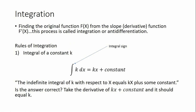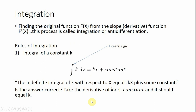First I'll go through the rules of integration. We'll start with the most basic — the integral of a constant. The integral of a constant k is just going to be kx plus a constant. One way we can check our answer when we take integrals is take the derivative of our answer, and we should get back what we're trying to take the integral of. The derivative of kx is just k, and the derivative of a constant is 0, so we get back what we were originally trying to take the integral of.